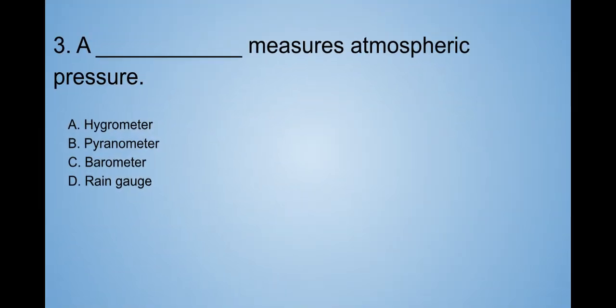Okay, that makes sense. Now, number three. A blank measures atmospheric pressure. A. Hygrometer. B. Pyranometer. C. Barometer. D. Rain gauge. I think it's a hygrometer. Am I right?